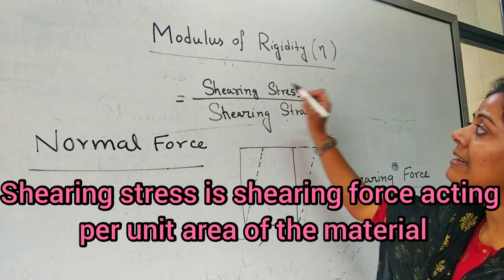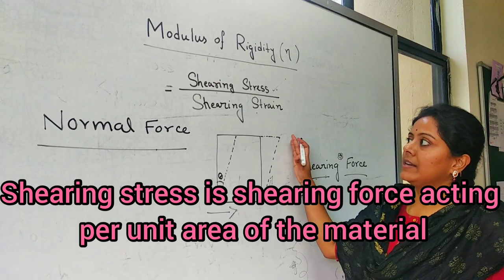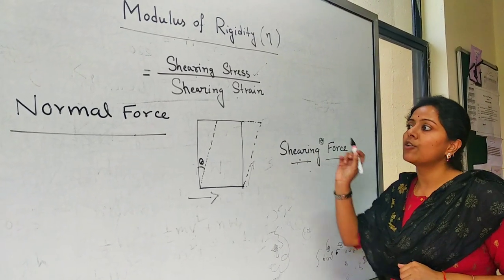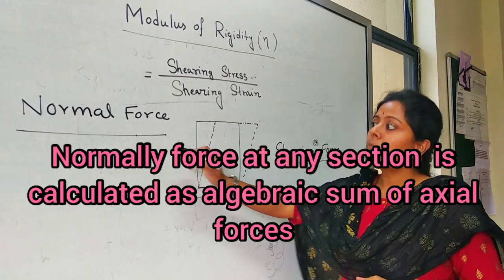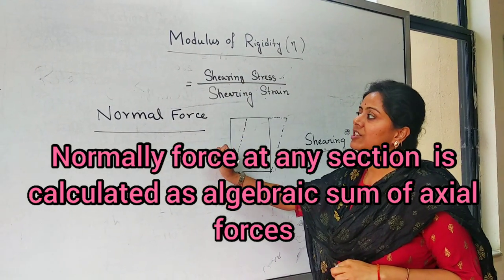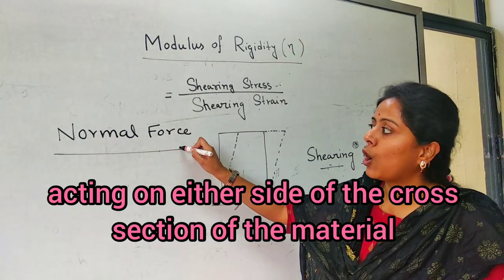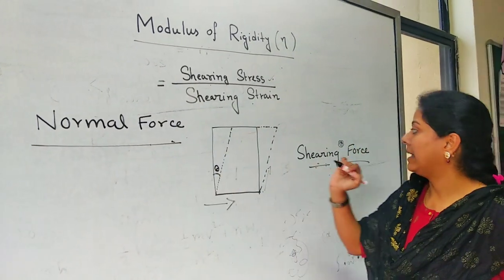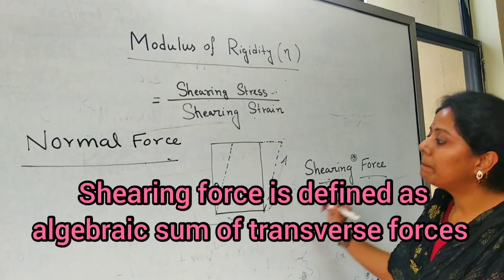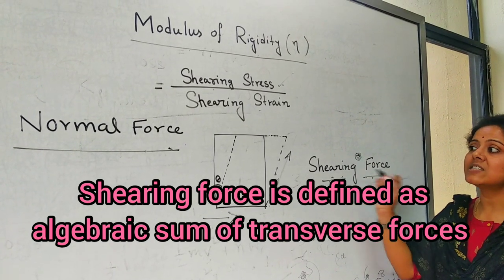What is shearing stress? Shearing stress means shearing force applied on a unit area. What is shearing force and what is the difference between a normal force and shearing force? Normal force acts perpendicularly to any material on either side, and it is the algebraic sum of coaxial forces. Shearing force is applied on the material and is the algebraic sum of tangential forces.